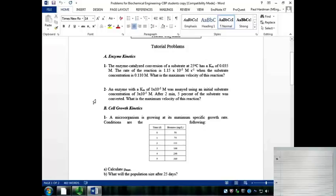Okay, so question one asks us to find the maximum volumetric rate of a reaction. So we're going to first start by writing down the constants given in the question.